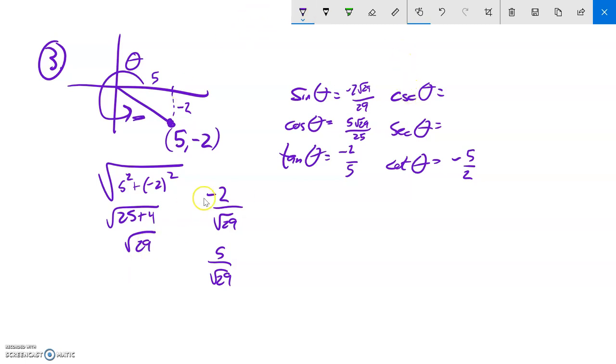And then cosecant is simply the reciprocal, so negative root 29 over 2. Secant's the reciprocal of cosine, so root 29 over 5. And there they all are.